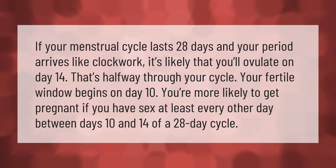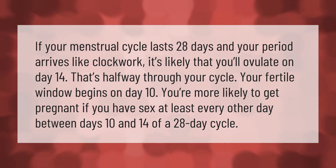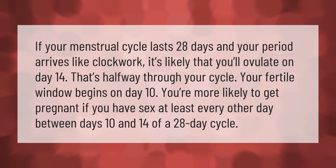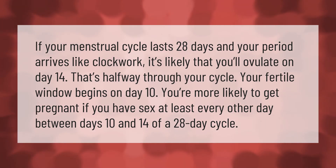If your menstrual cycle lasts 28 days and your period arrives like clockwork, it's likely that you'll ovulate on day 14 — that's halfway through your cycle. Your fertile window begins on day 10. You're more likely to get pregnant if you have sex at least every other day between days 10 and 14 of a 28-day cycle.